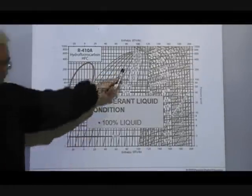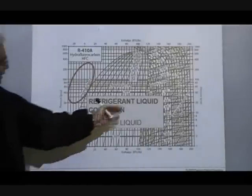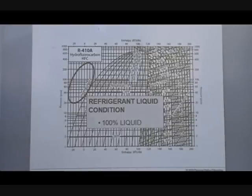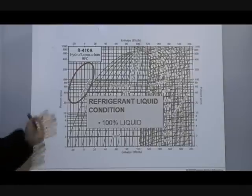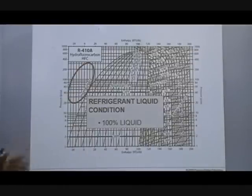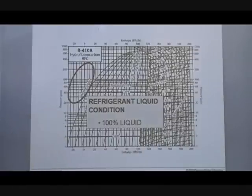These lines on the pressure-enthalpy chart are called lines of quality. Quality adds up to the saturated liquid, which is what you want — that's the best quality you can have. Why is it good quality? You've got to have 100 percent liquid entering your metering device. If you don't, it's like starting a drag race with your engine skipping and cutting out. So you need 100 percent liquid entering that metering device, and you can use the pressure-enthalpy chart to measure that.